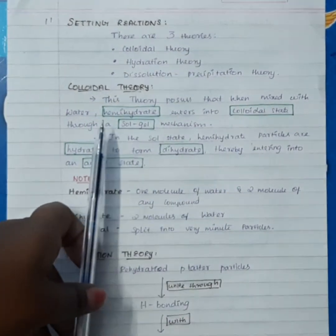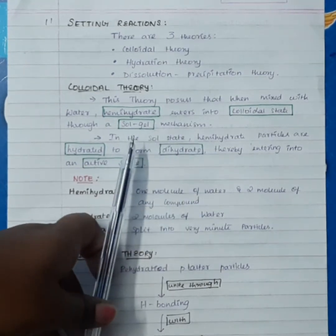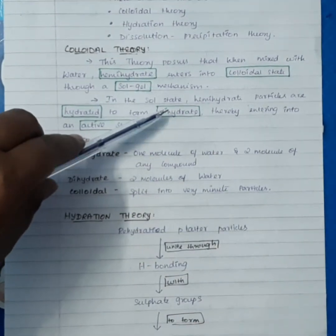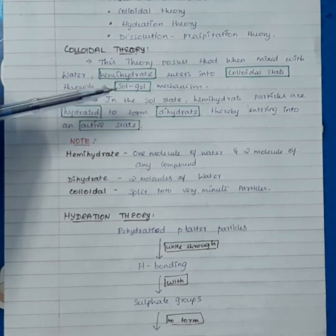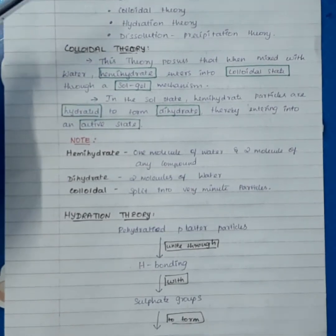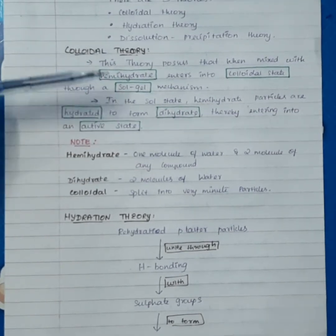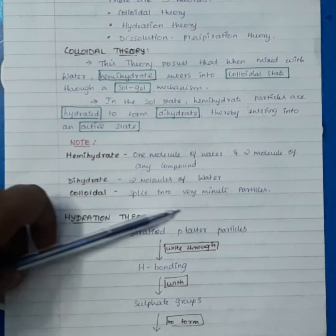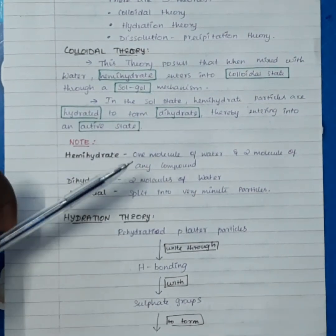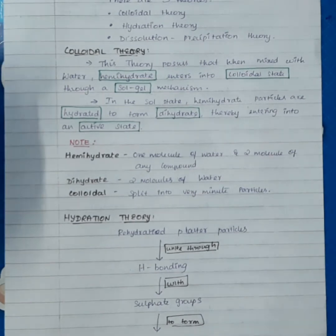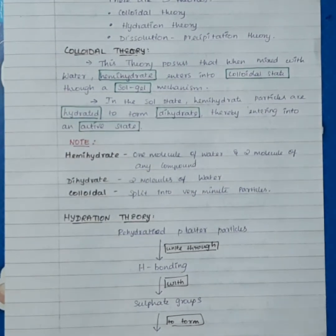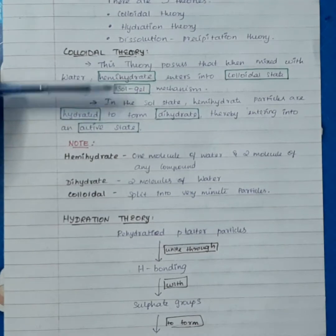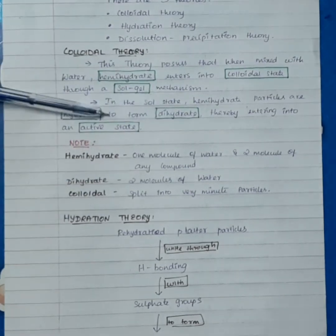Colloidal theory states that when hemi-hydrate is mixed with water, it enters into a colloidal state through a solid-gel mechanism. In liquid state, hemi-hydrate particles are hydrated to form dihydrate, entering an active state. Hemi-hydrate has one molecule of water, while dihydrate has two molecules of water. In solid state, hemi-hydrate particles are converted into dihydrate by hydration.